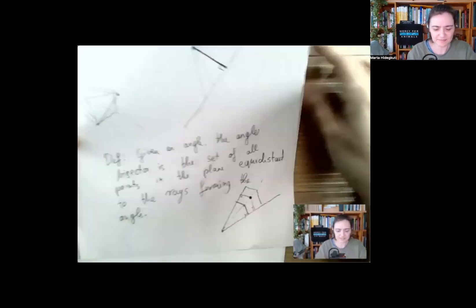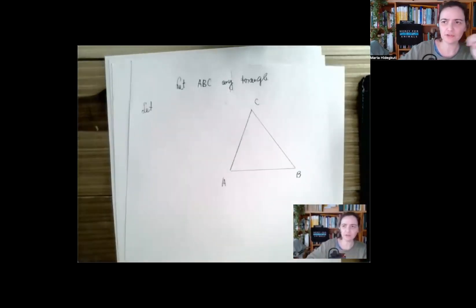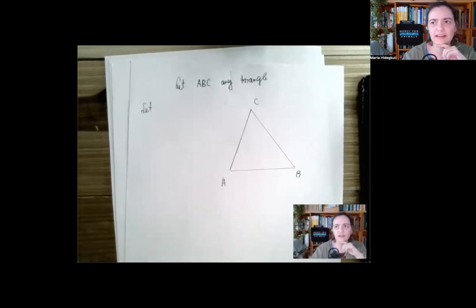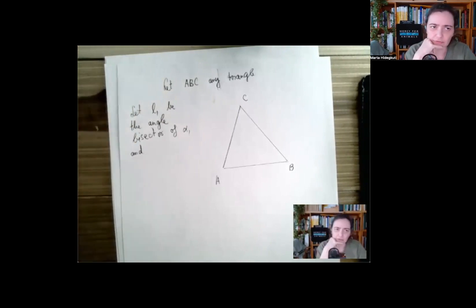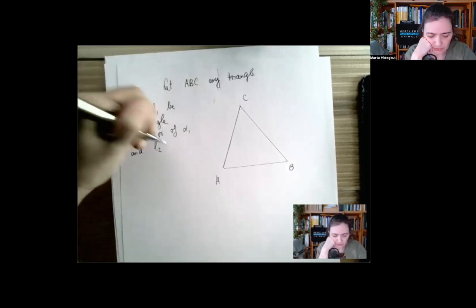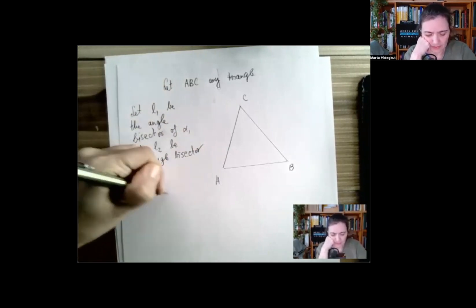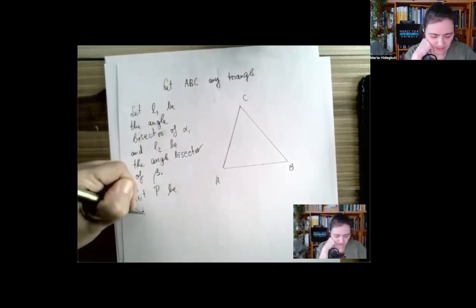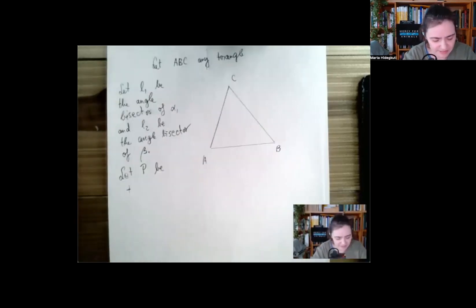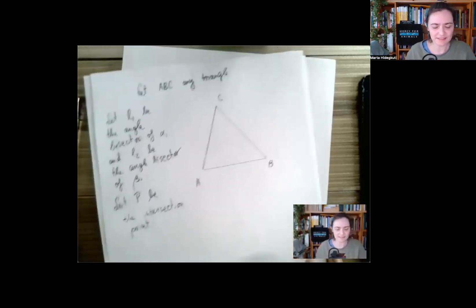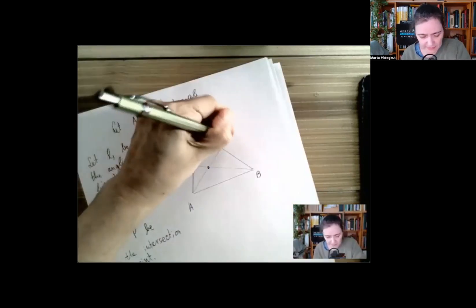That's the definition, and then the fun begins. Let ABC be any triangle and we're going to draw in the angle bisectors. Let L1 be the angle bisector of angle alpha and L2 be the angle bisector of angle beta, and let P be the intersection of those two lines — that should sound familiar from perpendicular bisectors.